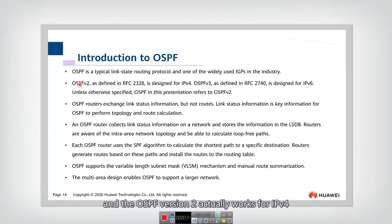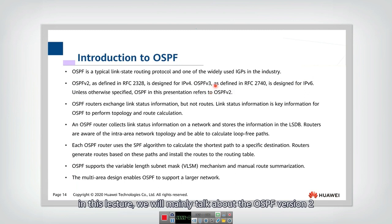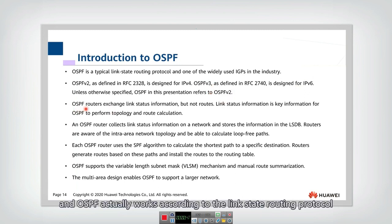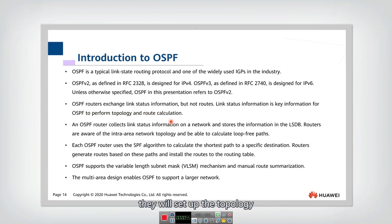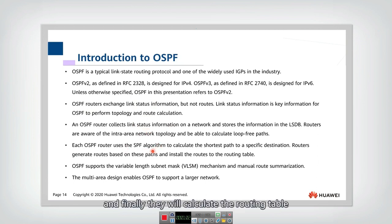OSPF version 2 works for IPv4, and OSPF version 3 works for IPv6. In this lecture, we will mainly talk about OSPF version 2. OSPF works according to the link-state routing protocol — it exchanges link states, sets up a topology, calculates the shortest path tree, and finally calculates the routing table.